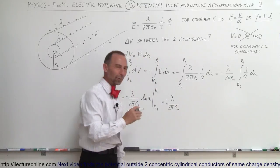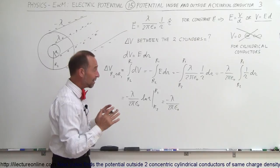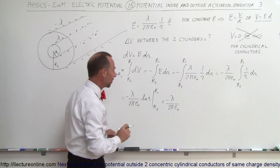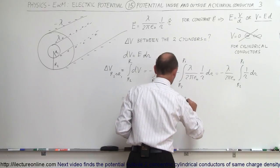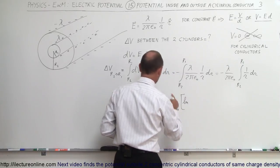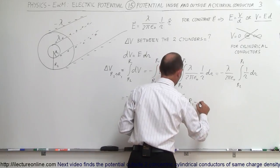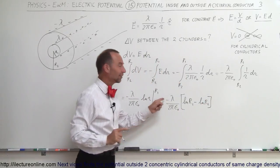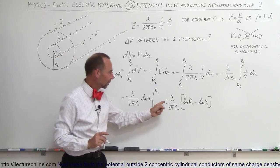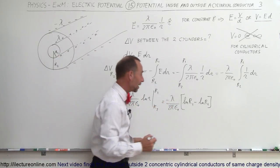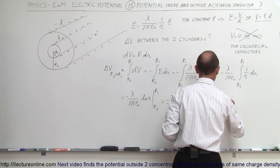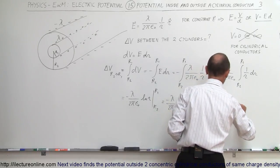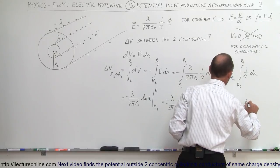One way to keep from making mistakes is to keep writing and only make small changes one step at a time. Evaluating the limits, we get the natural log of R1 when we plug in the upper limit, minus the natural log of R2 for the lower limit. Taking care of the negative sign by multiplying it through and swapping the terms, this equals positive lambda divided by 2 pi epsilon-naught times the natural log of R2 minus the natural log of R1.